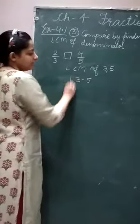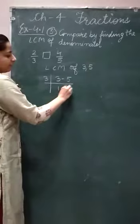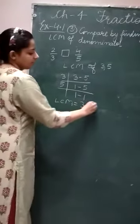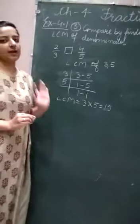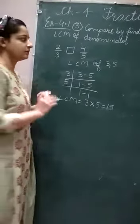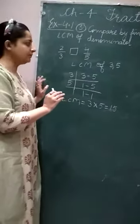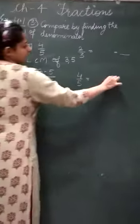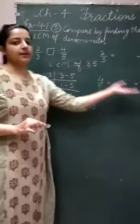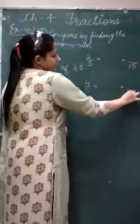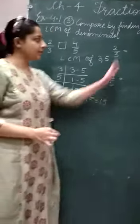We will find the LCM of 3 and 5. 3 divided by 3 gives 1; 5 remains as it is. Then take 5: 5 divided by 5 gives 1. So LCM is 3 × 5 = 15. Now that we have the LCM of 15, our next step is to convert these fractions into like fractions. Like fractions are those which have the same denominator. We will make equivalent fractions of 2/3 and 4/5 with denominator 15.